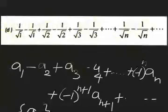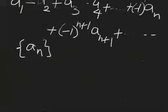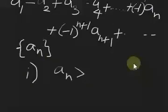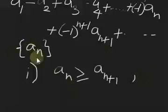The first condition is that the sequence a sub n should be monotonically decreasing — that means a sub n must be greater than or equal to a sub (n+1) for all n, or eventually decreasing. So this sequence should be decreasing.